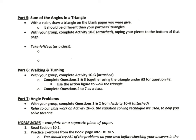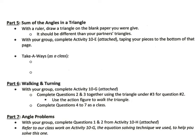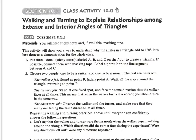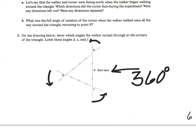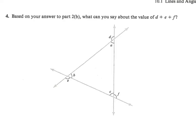What we found in class last time was that the sum of the angles of a triangle, for part five, is 180 degrees. Then we went down and did the walking and turning with our bendy guy, and found the sum of the exterior angles of a triangle is 360 degrees. So let's go ahead and finish that part. We started at point P, walked up, turned three times, and ended up with a full 360-degree rotation.